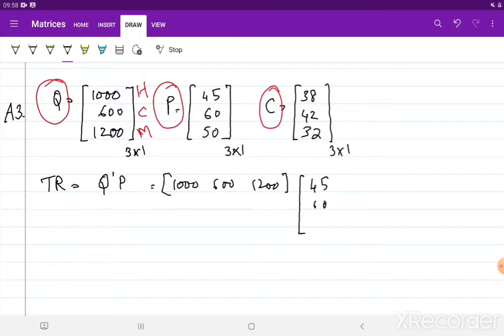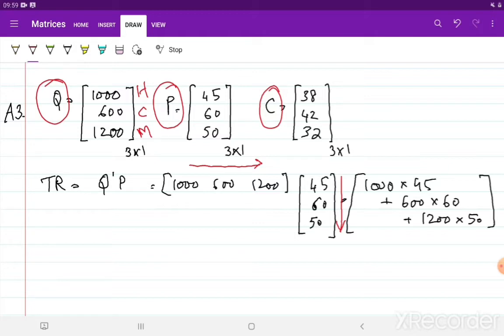That means I am multiplying Q dash or Q transpose with the column price matrix. So that is why I have written Q dash P at 60, 45, 16, and 50. So if you see, once again let me remind you that multiplication is always in this direction. So that would be 1000 into 45 plus 600 into 60 plus 1200 into 50.